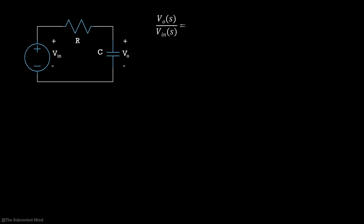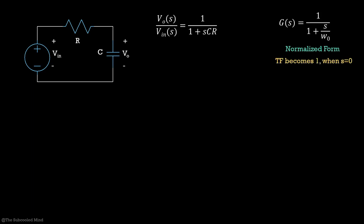Let us find the Bode plot of a simple RC circuit. In the last video, we found the output-to-input transfer function to be 1/(1 + sCR). If you are not an electrical engineer, don't worry — just think of the transfer function as being of the form 1/(1 + s/ω₀), where ω₀ = 1/(CR). This is also called the normalized form, as the transfer function becomes 1 when s is equal to 0.